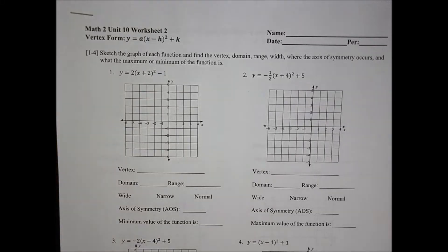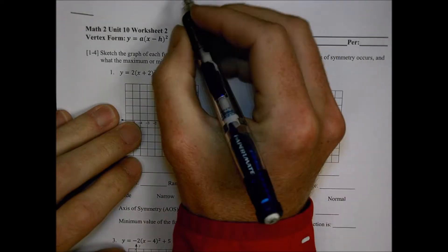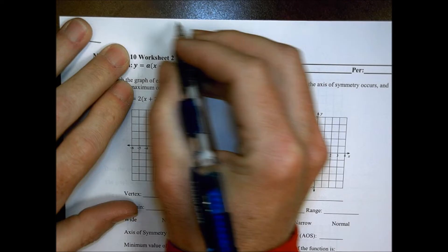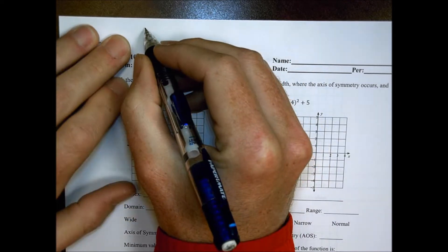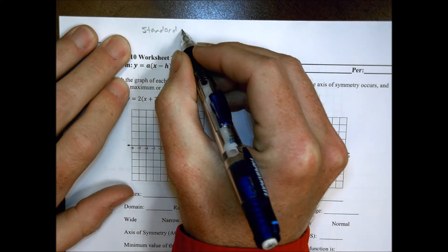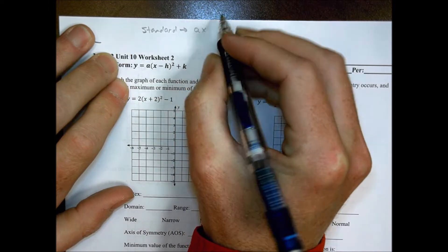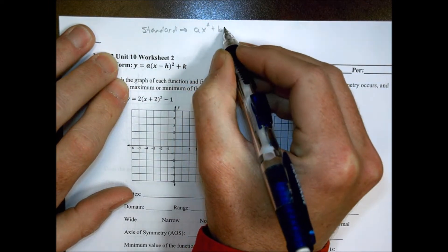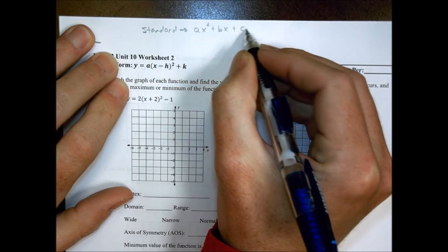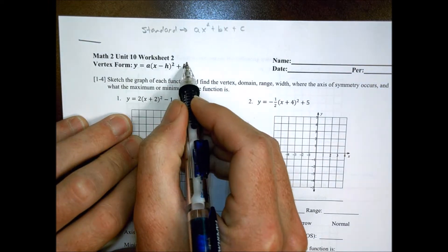Hey, this is Math 2, Unit 10, worksheet number 2, looking at what's called vertex form today. Our last lesson, we were looking at what we called standard form — ax squared plus bx plus c — and so now we're looking at what's called vertex form.